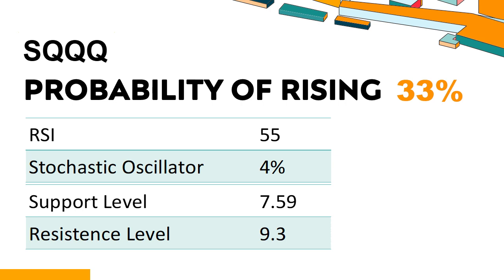Trend Outlook: SQQQ has a 33% probability of rising stock price. When the probability of rising is lower than 50%, it means that the probability of falling is relatively high. Combining multiple technical analysis indicators, SQQQ has 5 bullish signals and 3 bearish signals. SQQQ's short-term support level is 7.83; if it falls below 7.83, it will have a chance to test 7.59. The short-term resistance level is 8.81; if it breaks through 8.81, it will look up to 9.3.